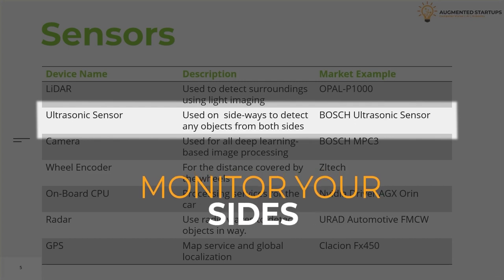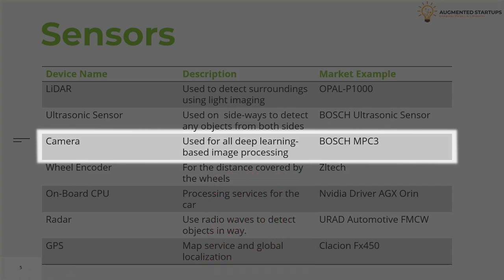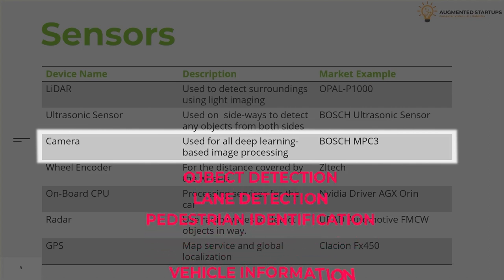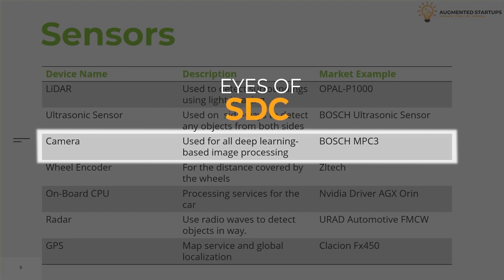The third one is the camera. Different types of cameras are required for image processing and using deep learning libraries to identify surrounding objects, humans, and vehicles. A commonly used model is the Bosch MPC, which can also be used for deep learning-based image processing for tasks that include object detection, lane detection, pedestrian identification, vehicle information, and so on. These cameras are the eyes of the self-driving car. Our car will be seeing different sorts of objects and making different decisions based on what it has acquired as information.